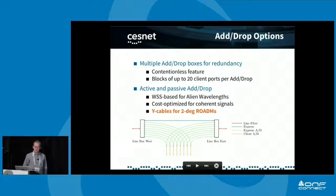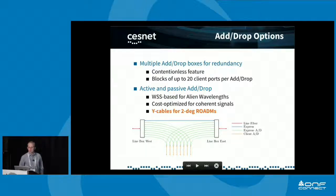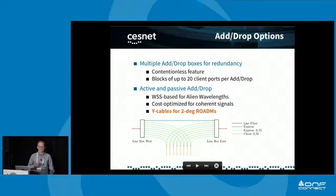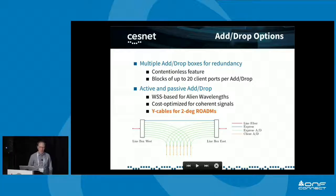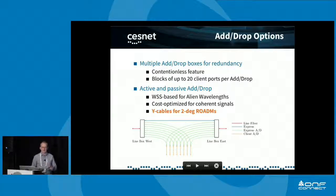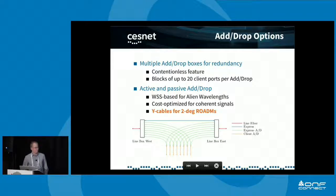Another interesting feature: because this is a route-and-select ROADM architecture, it's also possible to use a passive solution with Y-cables — essentially 50/50 power splitters. A piece of glass tends to have a far better reliability score than a system that's plugged into electricity and has spinning fans.